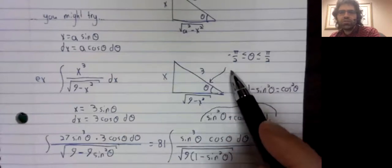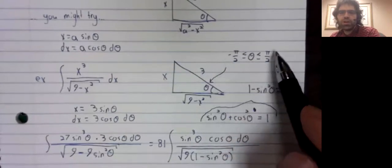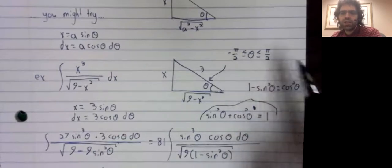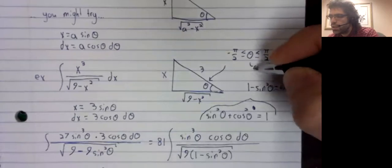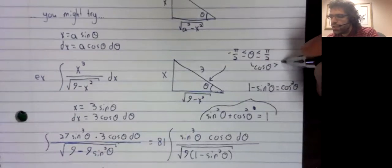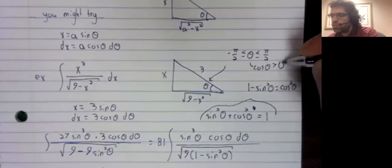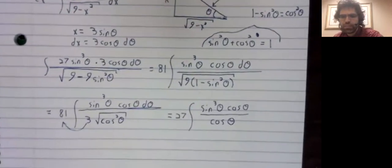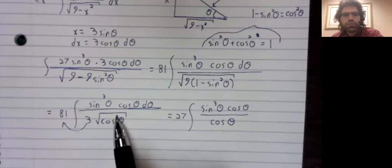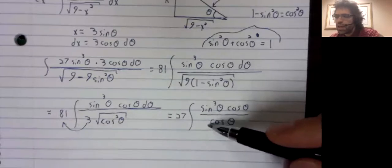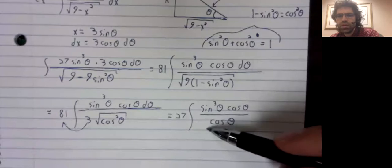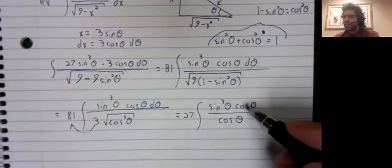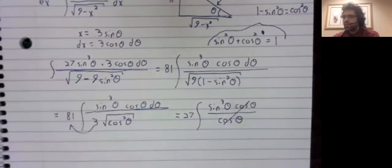Theta is between negative pi over two and positive pi over two. In the fourth and the first quadrant, the cosine of theta is positive. Ordinarily, if you have the square root of something squared, you'd have absolute values here, but we don't because it's positive. The absolute value doesn't do anything. Those cancel.